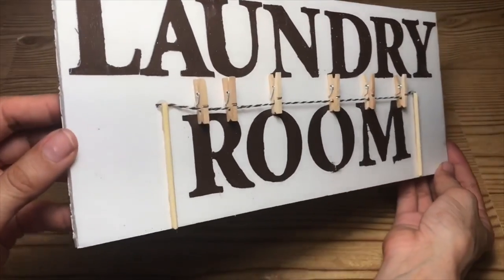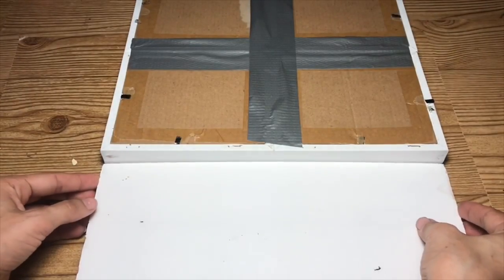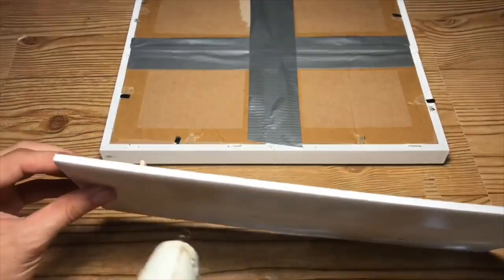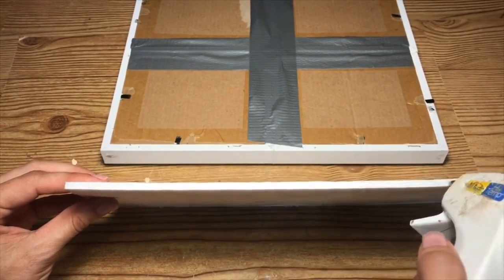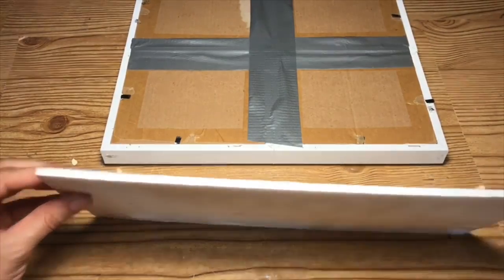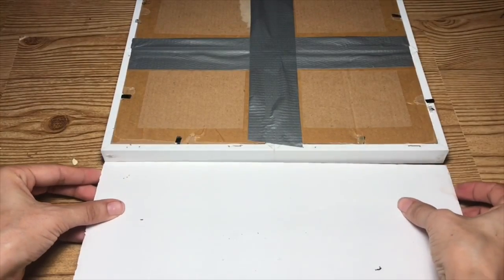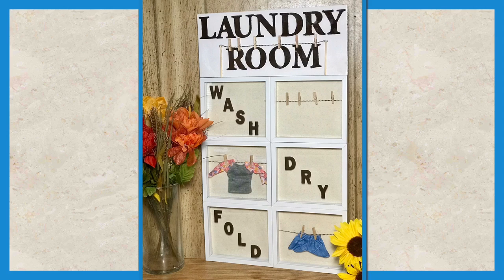Once you have the sign completed, you're going to glue that to the top of the frames. And this is what the completed laundry room sign will look like.